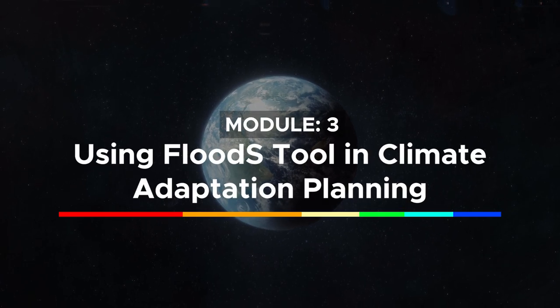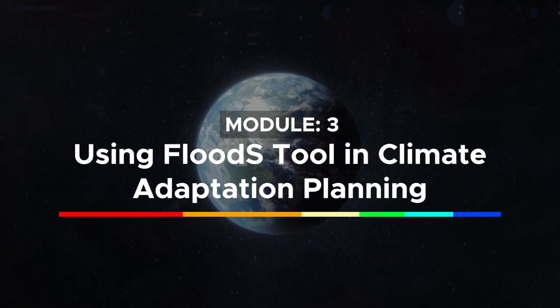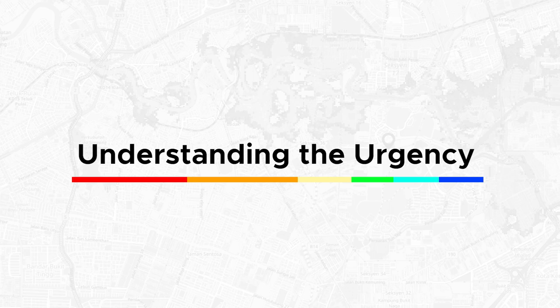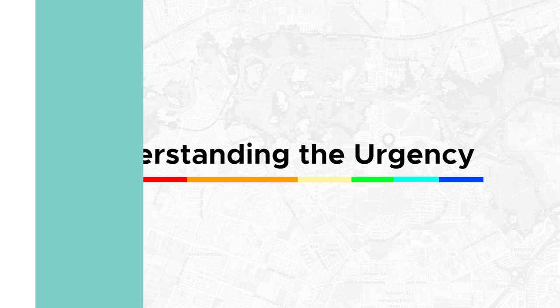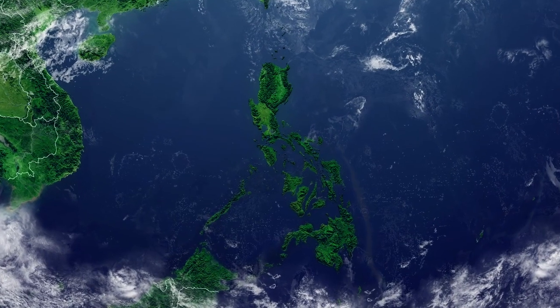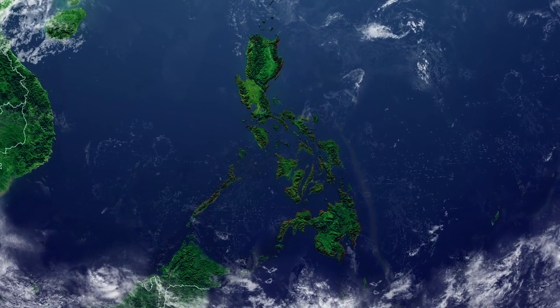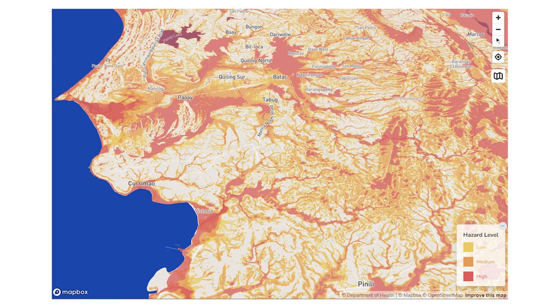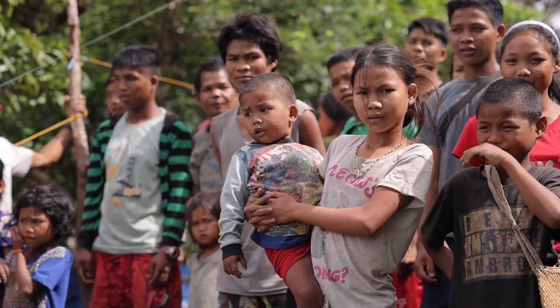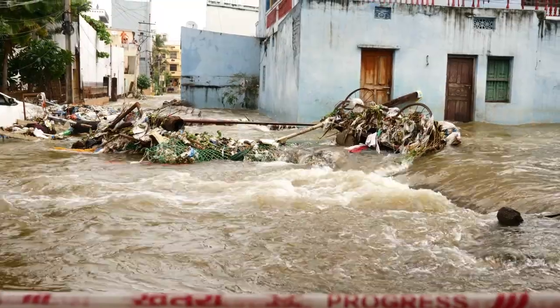Module 3: Using Flood S as a Tool in Climate Adaptation Planning — Understanding the Urgency. Imagine a world vulnerable to extreme flooding due to climate change. Governments, planners, and development agencies are grappling with the task of preparing communities for this increasing threat.